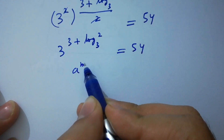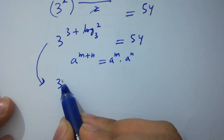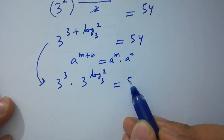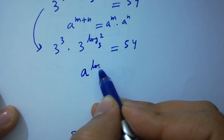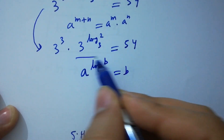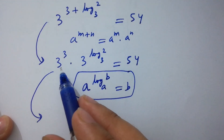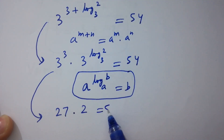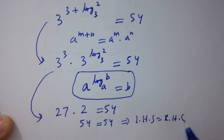Using a to the power (m plus n) equals a to the power m times a to the power n, it becomes 3 to the power 3 times 3 to the power log₃2 equals 54. Using the identity a to the power log_a(b) equals b, we get 27 times 2 equals 54, so 54 equals 54.